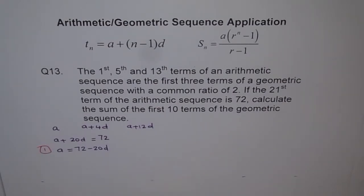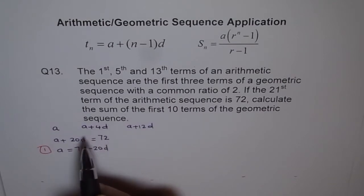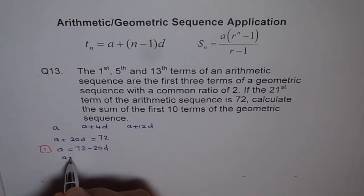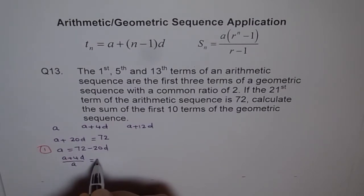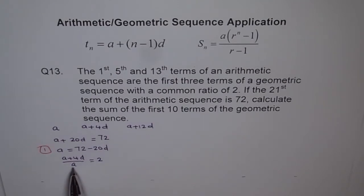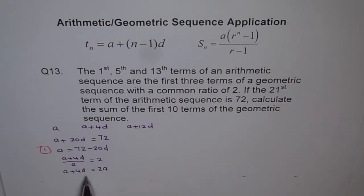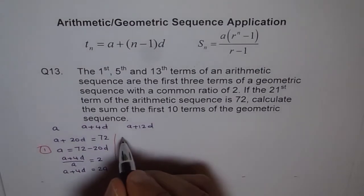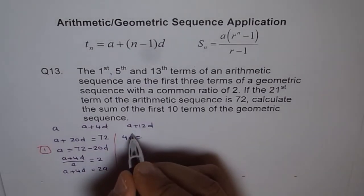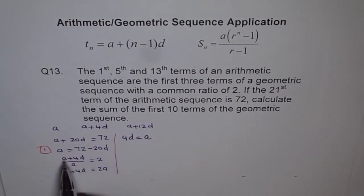Now, since the ratio of the geometric sequence terms is 2, we can write: A plus 4D divided by A equals 2. Cross-multiplying gives A plus 4D equals 2A, and rearranging gives 4D equals A. Let us call this Equation 2.